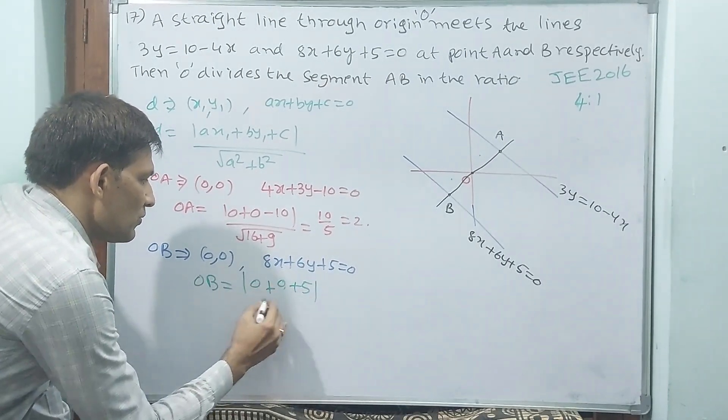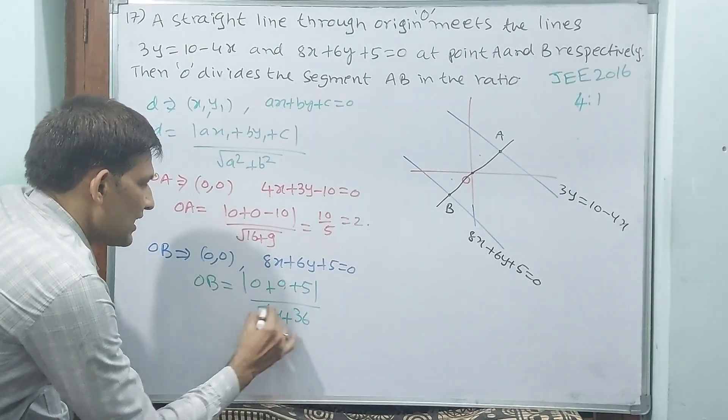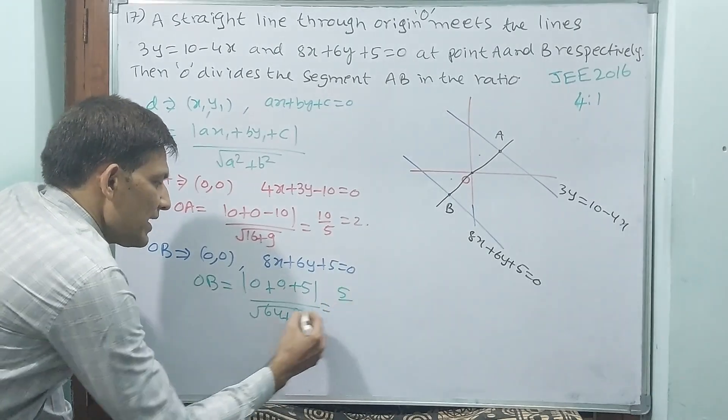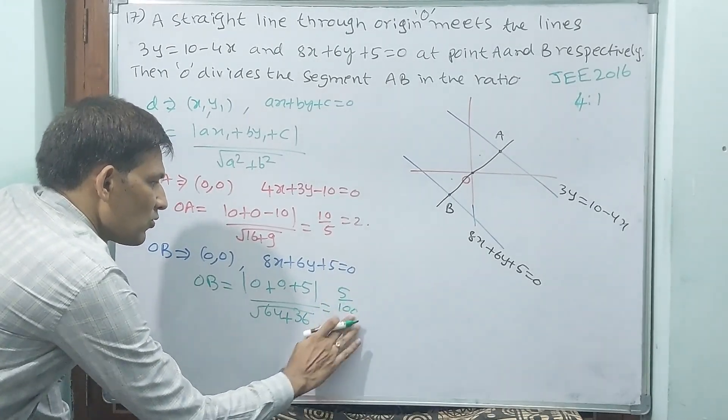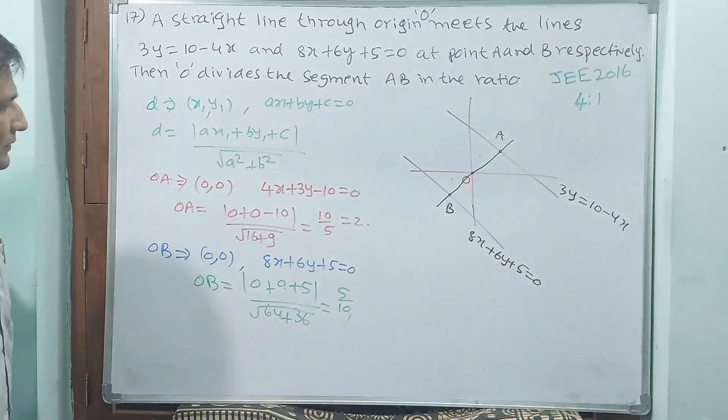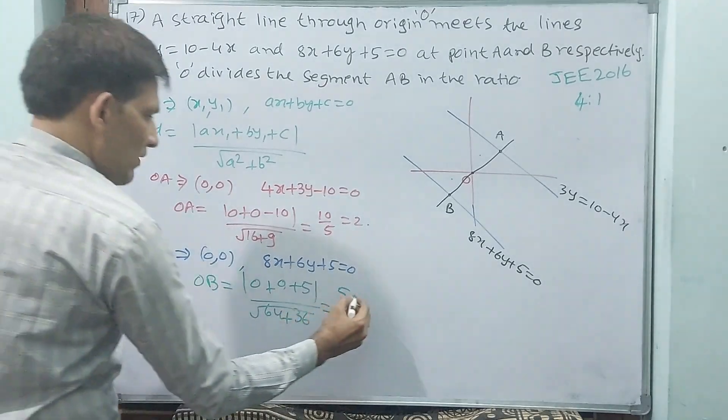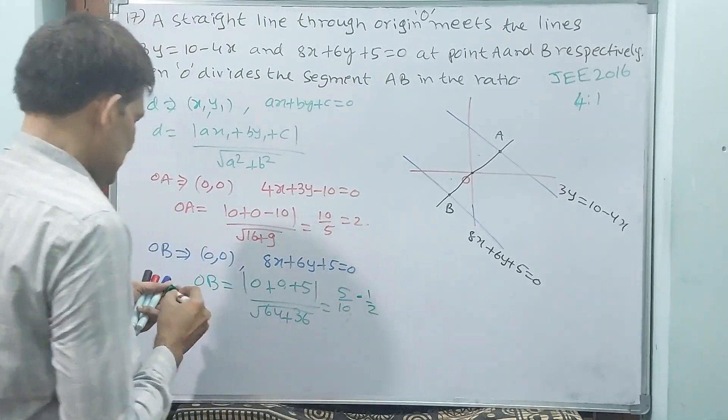= |5| / √(64 + 36) = 5 / √100 = 5 / 10 = 1/2.